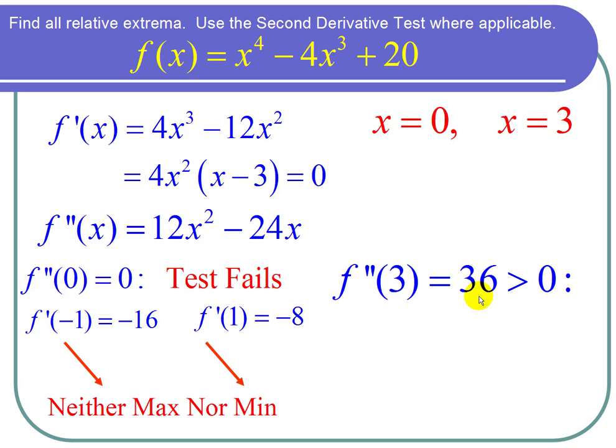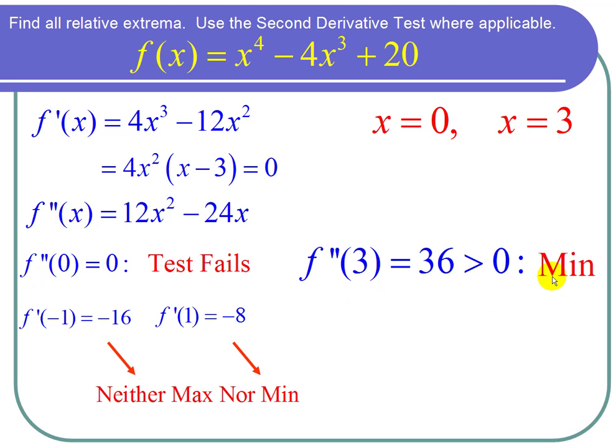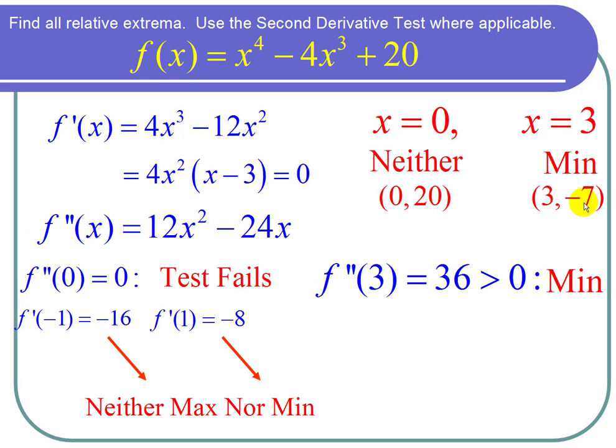Now let's finish the problem. If I plug in 0 and I plug in 3, I get 20 and negative 7. So in conclusion, at (0, 20), I don't have a maximum and I don't have a minimum. We call this a stationary point. At x equals 3 and y equals negative 7, I have a relative minimum. I'm done with the problem.